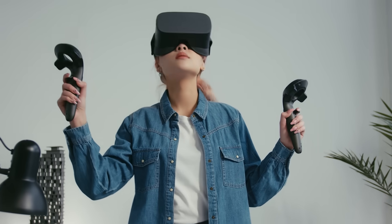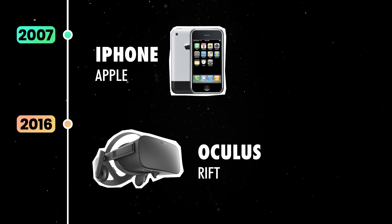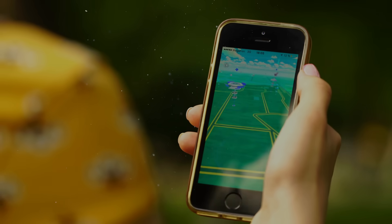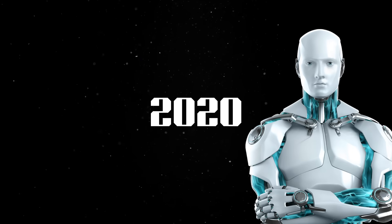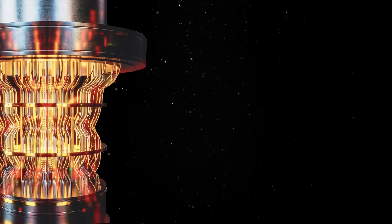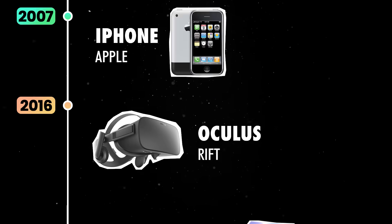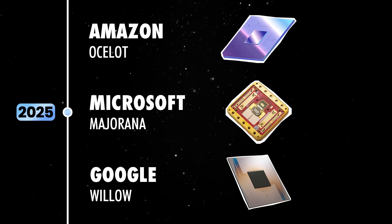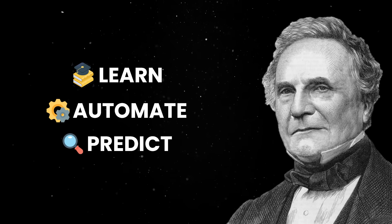Gaming saw yet another revolution with the emergence of virtual and augmented reality. In 2016, Oculus Rift brought immersive VR gaming to mainstream audiences, with games like Pokémon Go introducing millions of people to AR, blending digital elements with the real world. Stepping back to the present, the 2020s are shaping up to be the next frontier in computing, driven by advancements in artificial intelligence and quantum computing. Quantum computing, which leverages the principles of quantum mechanics to perform calculations at unprecedented speeds, is becoming a reality. Companies like Google, Amazon, and Microsoft are racing to build practical quantum computers, which could revolutionize everything from cryptography to drug discovery. The computing revolution that started with Charles Babbage's mechanical gears has led us to a world where machines can learn, automate complex tasks, and even predict human behavior.